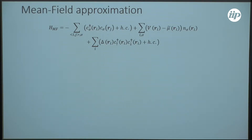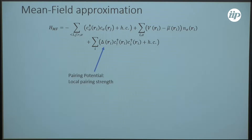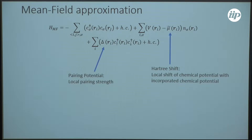The corresponding mean-field Hamiltonian that we want to look at looks like this. We have a pairing potential here that is responsible for the Cooper pairing — so there we can either put two particles into the condensate or extract two particles out of the condensate. And we have the Hartree shift, which takes care of the fact that particles tend to want to sit on the same site, so we have a lower chemical potential at those sites where particles already sit.